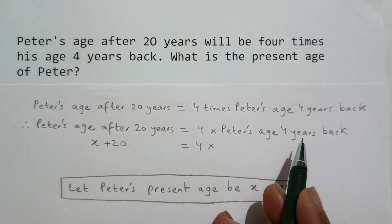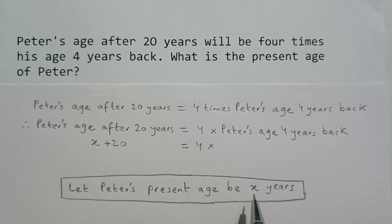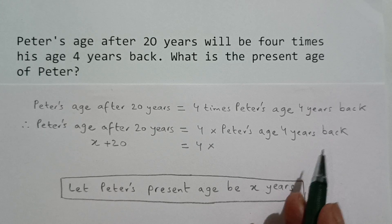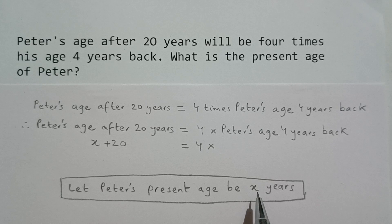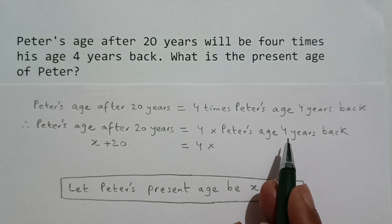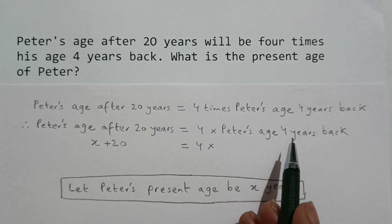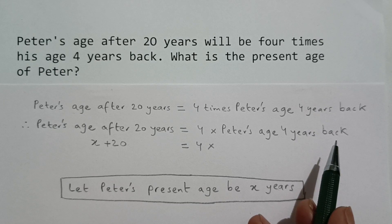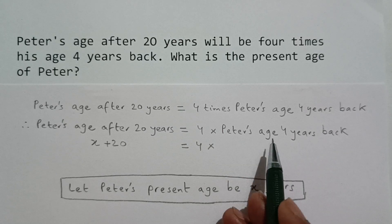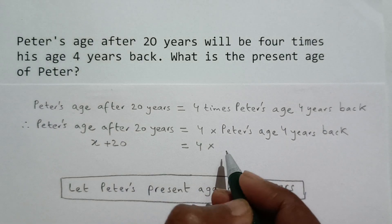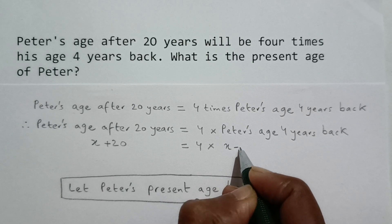So what is Peter's age 4 years back? We know Peter's present age is X years. 4 years back, Peter's age was X minus 4 years. For example, if your present age is 10 years, your age 4 years back would be 10 minus 4, which is 6. So Peter's age 4 years back was X minus 4 years.